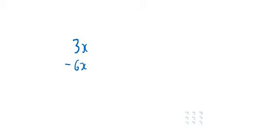So what could I multiply? What could I multiply the top one here by? What could I multiply that 3x in order to get a minus and a positive and the same number in front of the x? Well, hopefully you can see that you multiply it by 2. So if I multiplied that 3x by 2, you would get 6x and minus 6x, and then you'd be able to cancel them out.